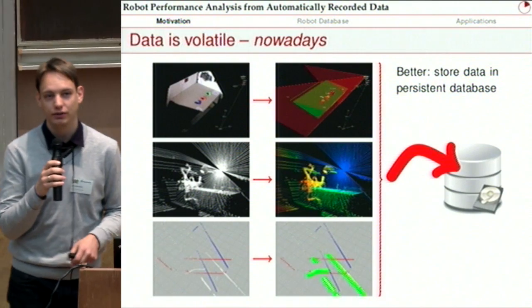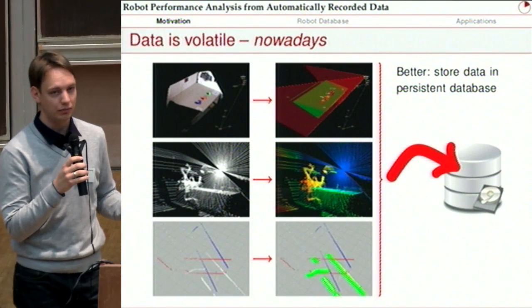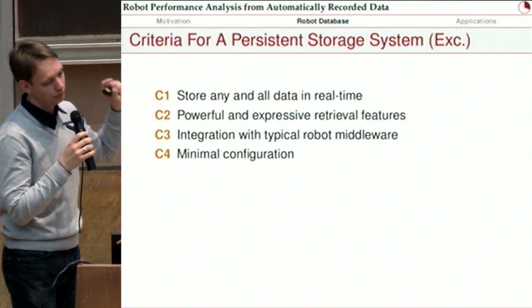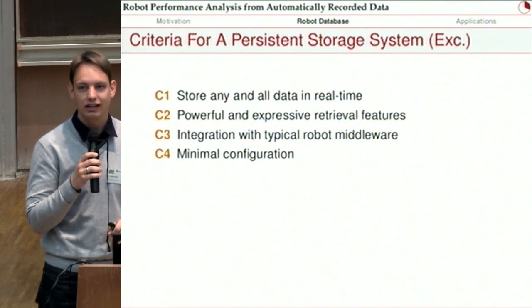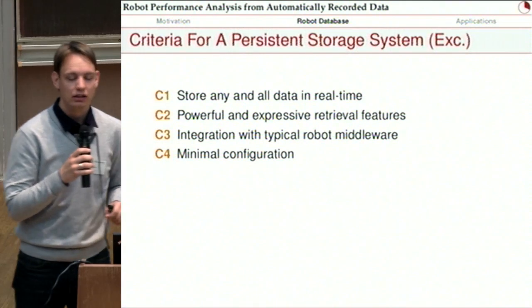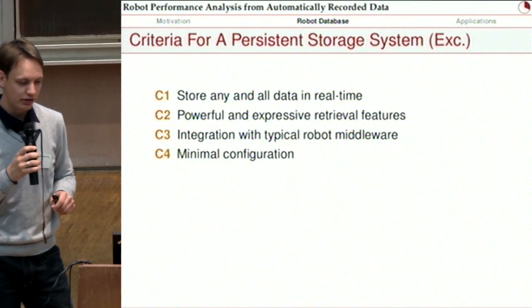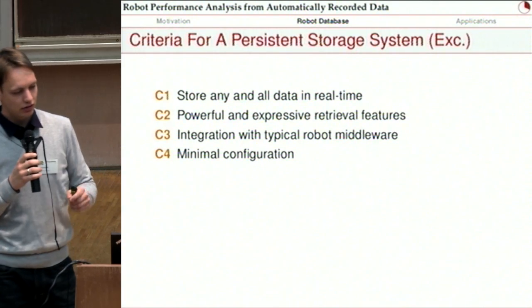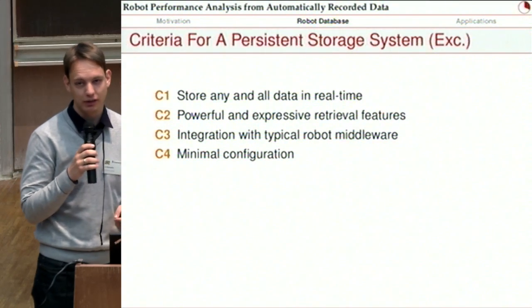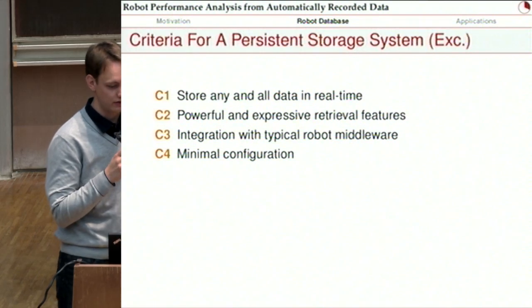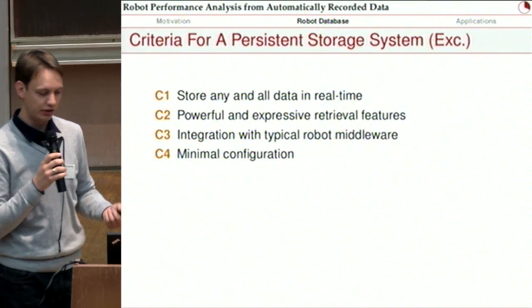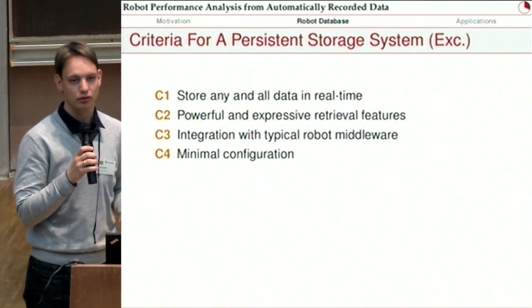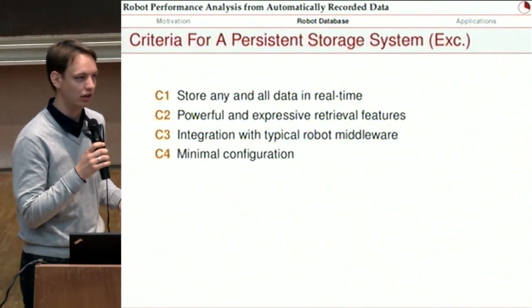What we argue is that it would be much better if we store most, or at least some, of this data to a database so that we can use it later on. We have come up with some criteria — this is an excerpt from an IROS paper. We want to be able to store any and all data, and we want to do that in real time, because we do not want to run into the situation where afterwards you say 'I should have logged this particular piece of data but now I cannot analyze what was going on.' Another criterion is that we want powerful and expressive retrieval features so we can actually do something with the data afterwards. We want to integrate it with typical robot middleware — here in particular ROS, but we also have integration with our own framework. And we want minimal configuration, so the student doesn't say 'it was a pain so I didn't run your logging and now we cannot analyze.'